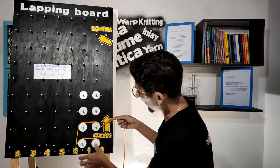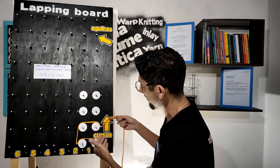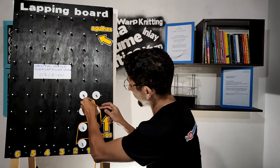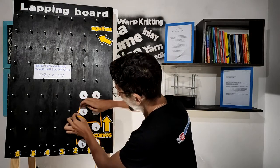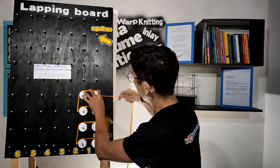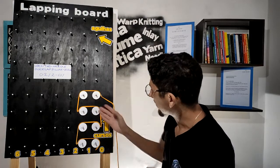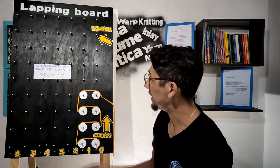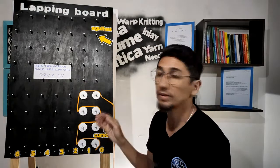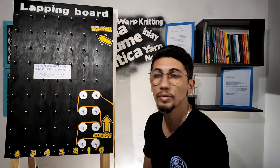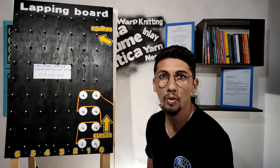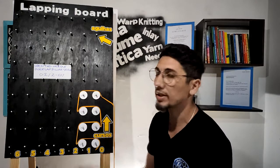This is the repeat, but we can make it on the next needles: again zero-two and two-zero. This is the representation of the open two-needle overlap pillar stitch on the lapping board. This way we finish the representation of all basic lappings on the lapping board.